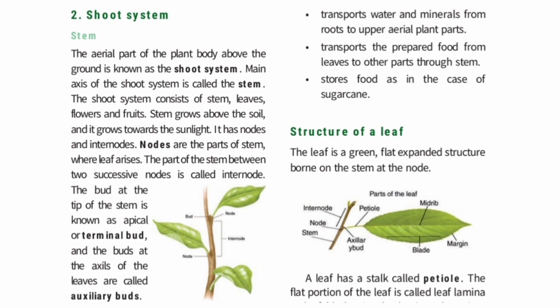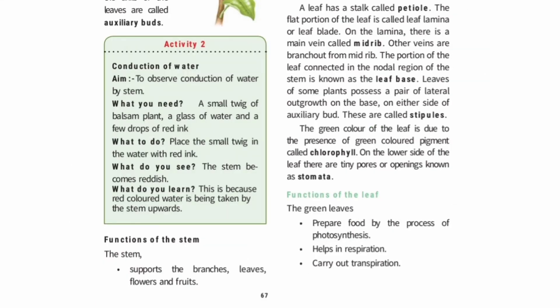Green leaves prepare food by the process of photosynthesis. With the help of sunlight, chlorophyll, water, and carbon dioxide, the plant prepares its own food. 'Photo' means light and 'synthesis' means preparation. That is why the green leaves are called the food factories of the plant.